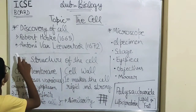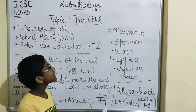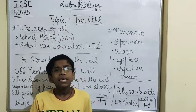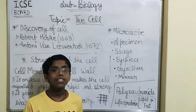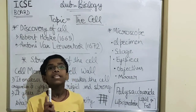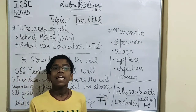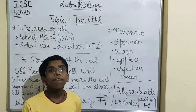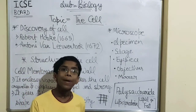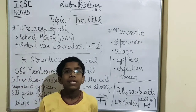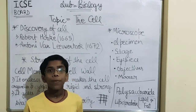The next discovery was made by Antony Van Leeuwenhoek. In 1672, he discovered single-celled organisms in water. He made his own microscope and through it discovered single-celled organisms in water. This opened up the entire vast world of microorganisms.